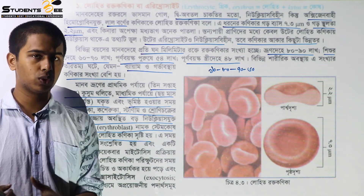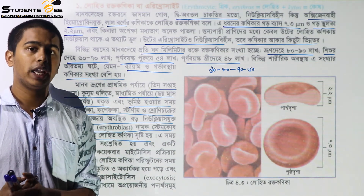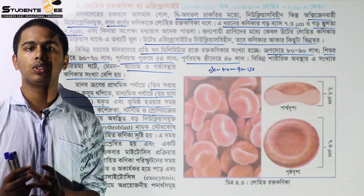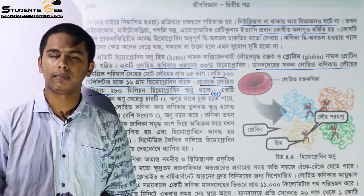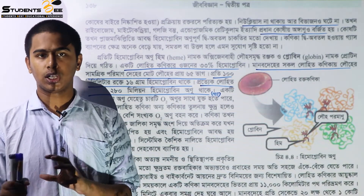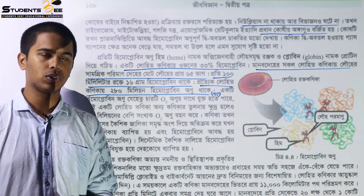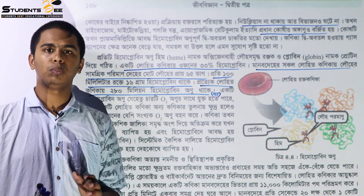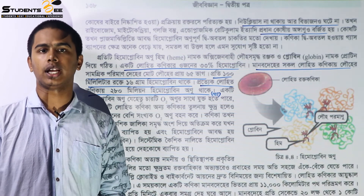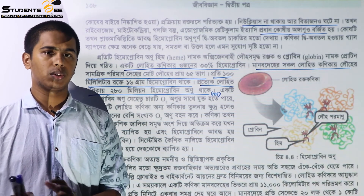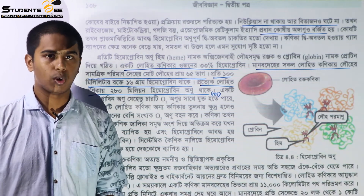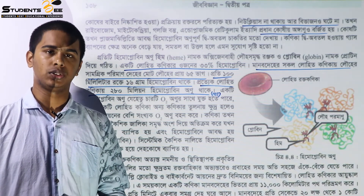This is the erythroblast. This is the stem cell. The erythrocyte is very common. This is the nucleus — the nucleus is the main thing. The ribosome, mitochondria, and endoplasmic reticulum — this is the erythrocyte.